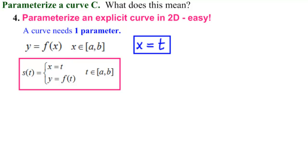In vector parametric form, what does this look like? We would write it as S vector. There's the components. The X component is T. The Y component is F of T, and here's our interval, as always.